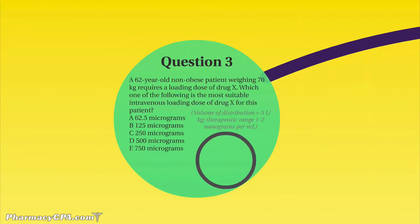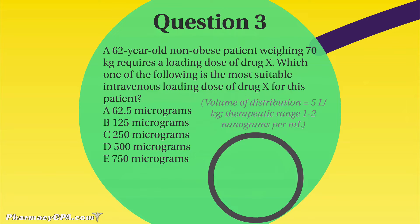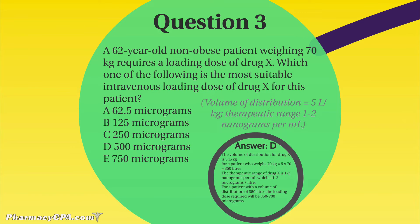Question three: a 62-year-old non-obese patient weighing 70 kilograms requires a loading dose of drug X. Which of the following is the most suitable intravenous loading dose for this patient? You need to know your pharmacokinetic equations for this — certain attributes like volume of distribution and therapeutic range need to be plugged in. The answer is D.